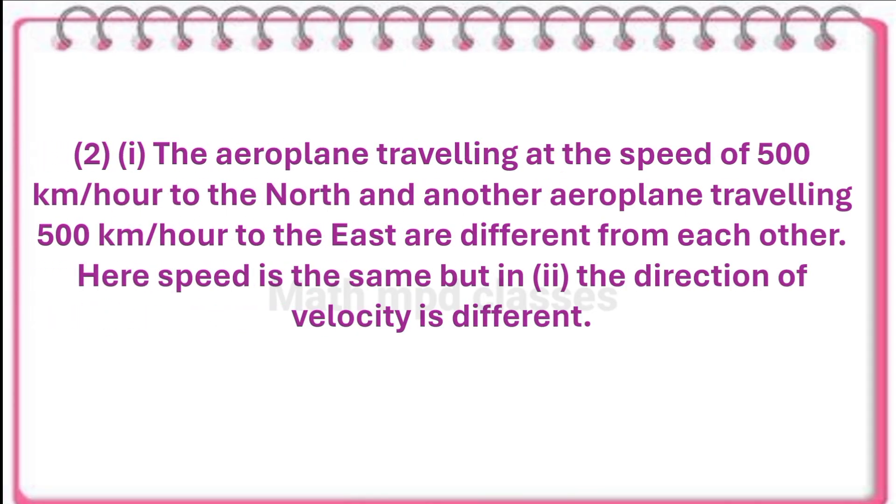Second point: the aeroplane traveling at the speed of 500 kilometers per hour to the north and another aeroplane traveling 500 kilometers per hour to the east are different from each other. Here, the speed is same but the direction of velocity is different.